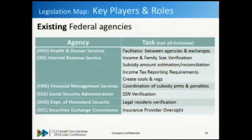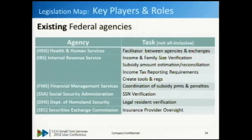FMS - the Financial Management Service - will be the administration of subsidy payments and penalties, so that could be a new reason you start to see refunds reduced. SSA: don't expect 500-series rejects to go away any time soon - SSN validation still has to happen at the state exchange. DHS handles legal resident verification, and SEC does the administration and oversight of insurance providers.